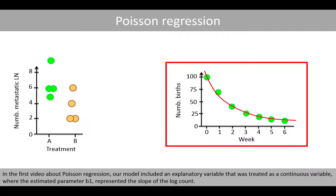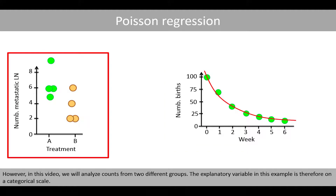In the first video about Poisson regression, our model included an explanatory variable that was treated as a continuous variable, where the estimated parameter B1 represented the slope of the log count. However, in this video, we'll analyze counts from two different groups. The explanatory variable in this example is therefore on a categorical scale.